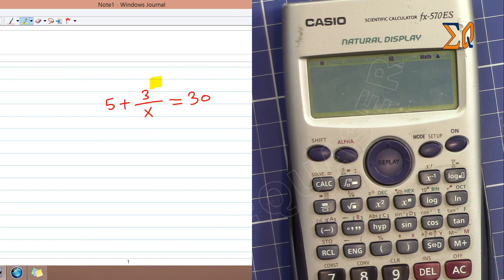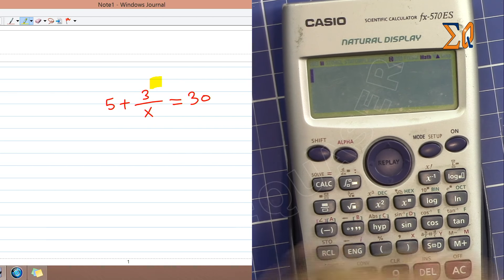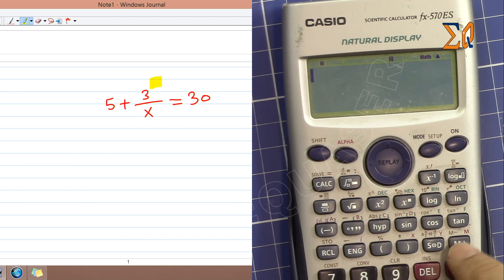When you want to solve for x, let's say this is 5 plus 3 over x equals 30, you don't have to do any calculation with pen before finding the value of x. We just enter this directly into the calculator and solve it.